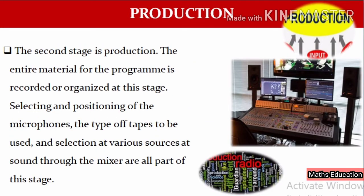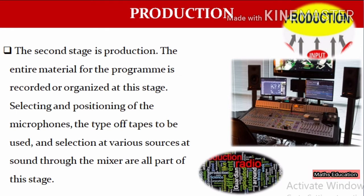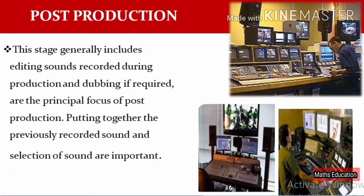At the production level, production work is done — functions are organized, shooting is carried out, and then production is completed. Video is done. Then post-production is done. In post-production, telecasts are handled. If you have mistakes, you have to correct them.